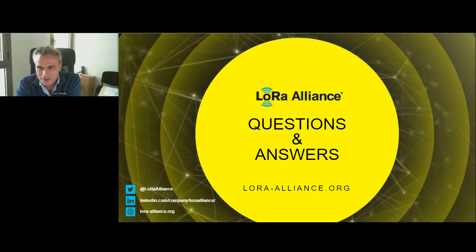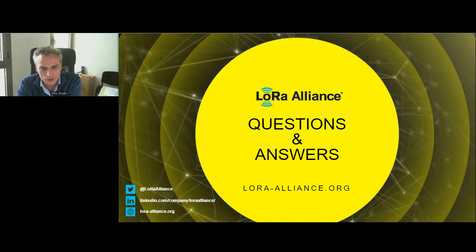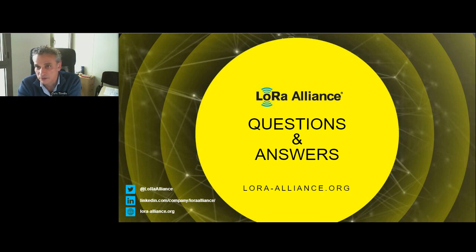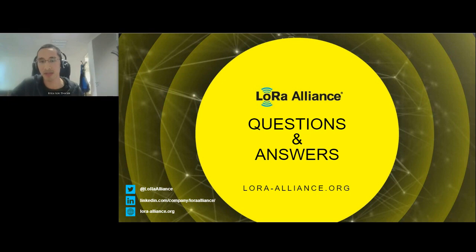From David: do you have a side-by-side comparison of energy consumption for a standard end node versus when using a relay? We showed this kind of comparison in the previous slides. With the assumptions we made, the relay causes the end node to consume roughly two to four times more energy, but it really depends on the scenario. From Andrea: do end devices need to be provisioned on the network server just like normal end nodes? Yes — they need to be provisioned like a standard end node, but you will need to tell the network server that this end device is also a relay.